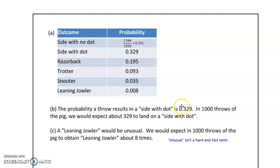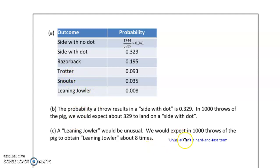The probability that a throw results in a side with dot is 0.329 — that's the number of side-with-dot results divided by the total of 3,939. If we're doing 1,000 throws, we take this experimental probability value and multiply it by 1,000, because in 1,000 throws this proportion should land on side with dot, meaning approximately 329 should land on side with dot. For section C, we're looking for leaning jowl being unusual. Remember, unusual is not a hard and fast term, but it's super low — lower than any other outcome by a factor of 10.